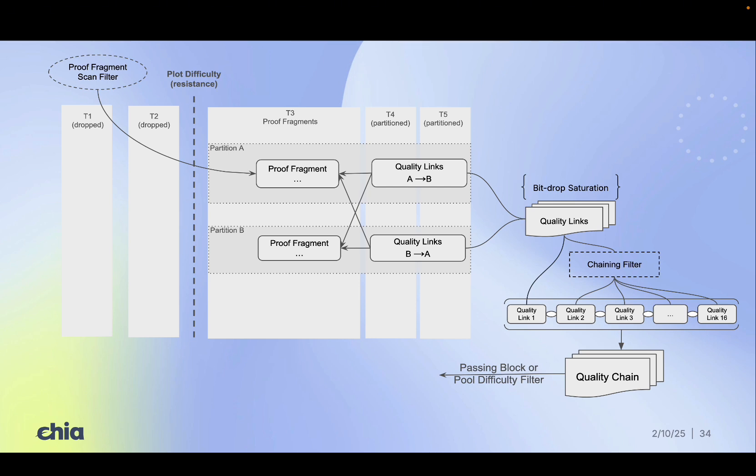If a chain passes, it's a winning proof, but each quality link includes only three of the four required fragments, so the proof still isn't quite complete.